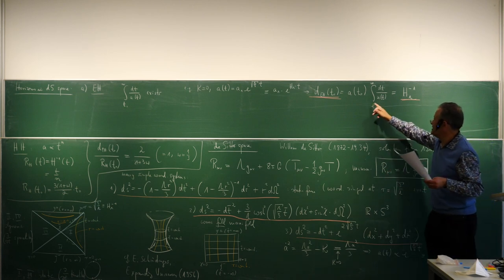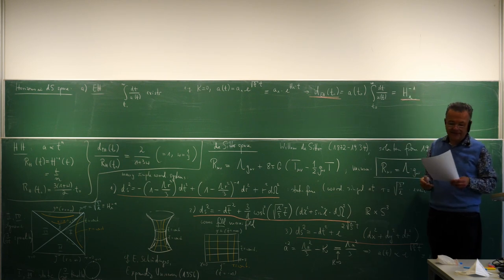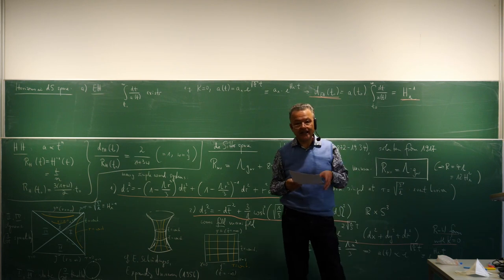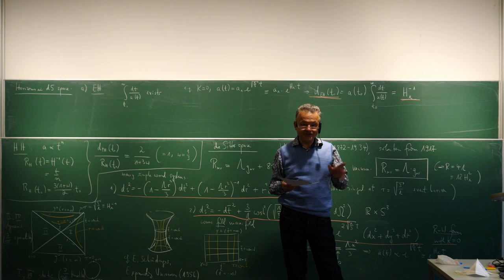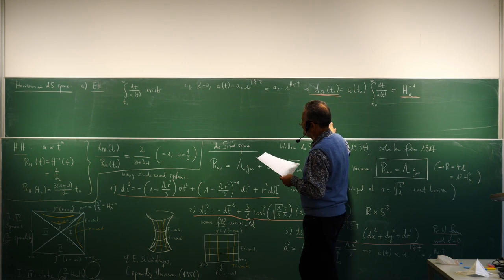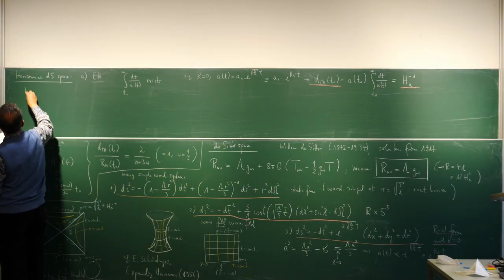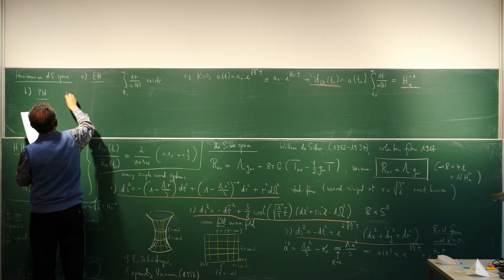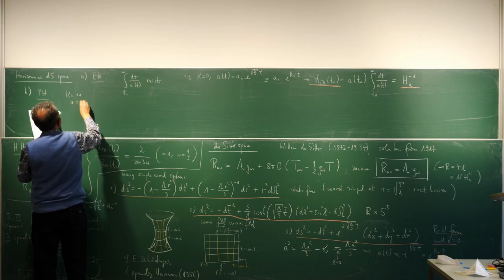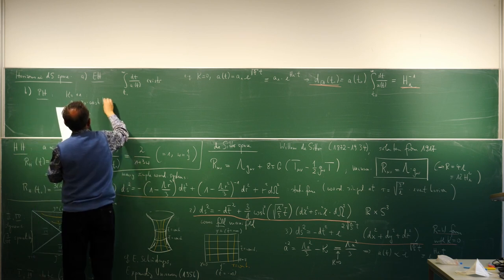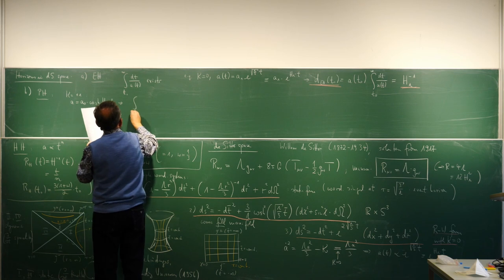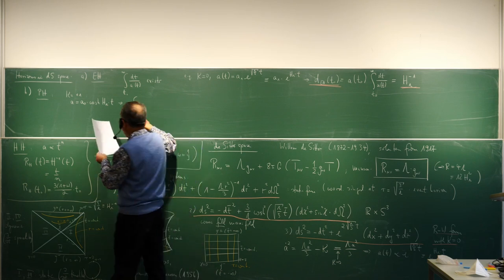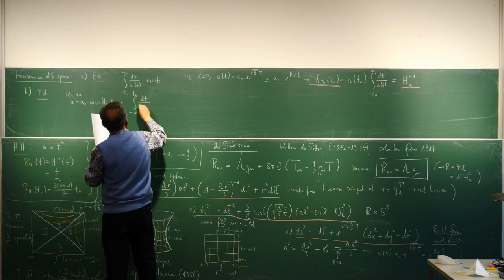Every event that happens at a distance bigger than H_lambda^{-1} at time t_naught will be forever invisible — that is the event horizon. For the particle horizon with k equals plus one: a equals a_0 cosh(H_lambda t), and the integral from minus infinity to today of dt over a(t) converges. For the flat case, the calculation is simpler. The physical particle horizon is d_ph(t) = e^{H_lambda t} times the integral from t_1 to t of e^{-H_lambda t} dt, which gives H_lambda^{-1} (e^{H_lambda(t - t_1)} minus 1).